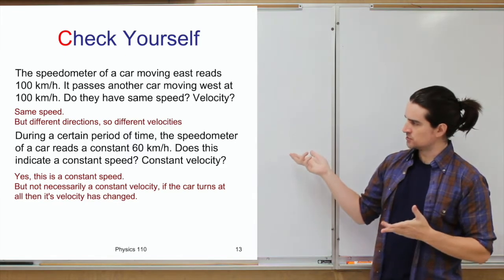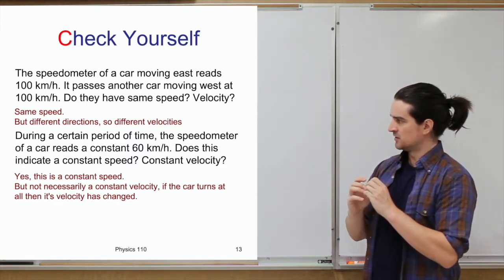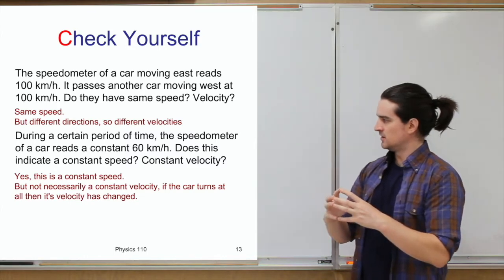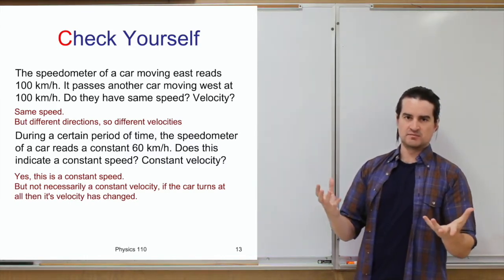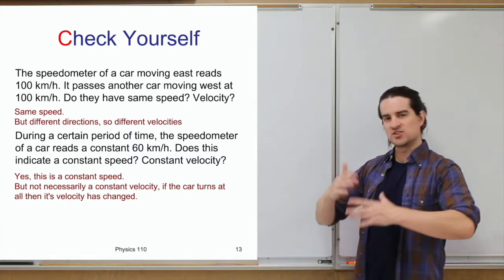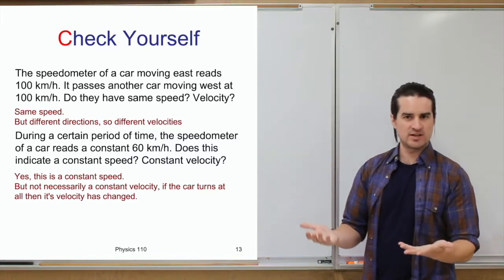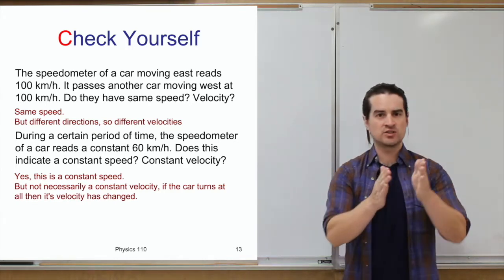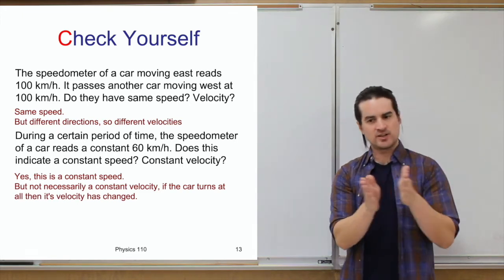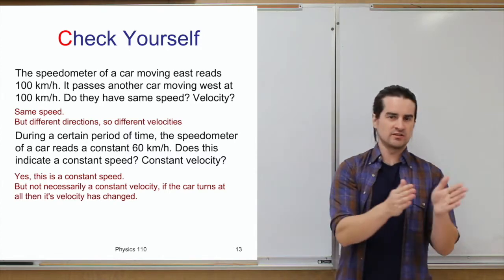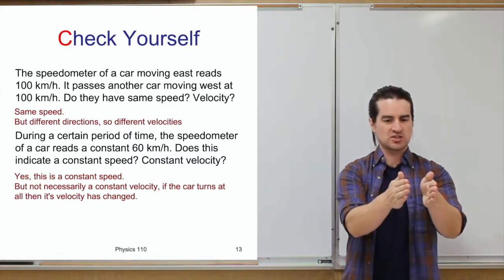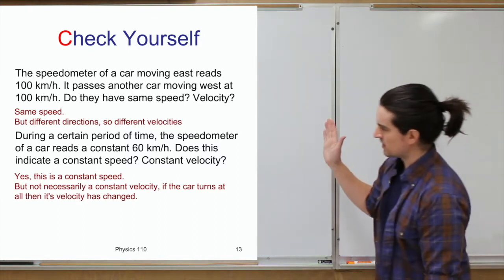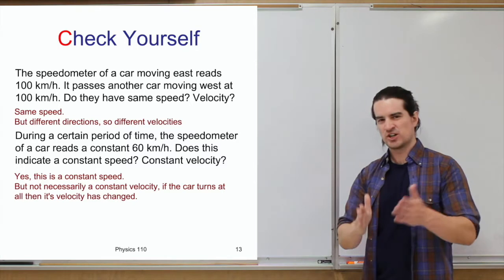If your car shows a constant 60 kilometers per hour, that is indeed a constant speed — it doesn't care about direction. Is it a constant velocity? That's trickier — the answer is I don't know. It could be constant velocity if going perfectly straight, but if the car ever turns, its velocity changes even though the speed doesn't. So the better answer is: possibly, but probably not.